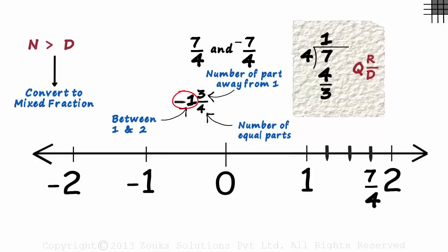Now the number minus 1 tells us that minus 7 by 4 is between itself and the next number. Make note of the fact that the next number will be on the left-hand side since minus 7 by 4 is a negative rational number. So the next number is minus 2. Now we can say that minus 7 by 4 is between minus 1 and minus 2.